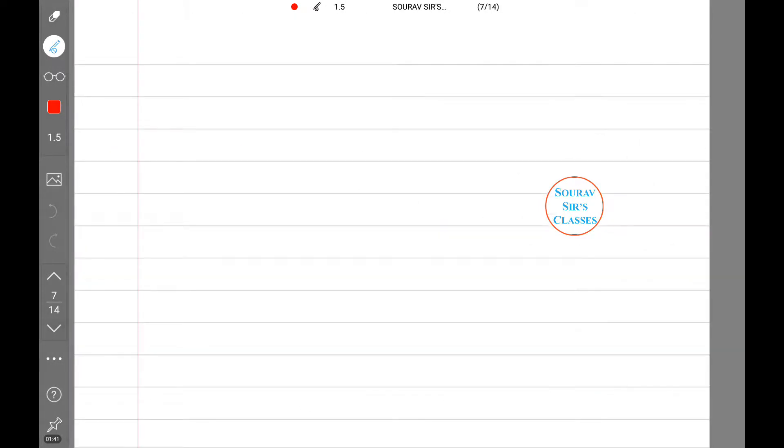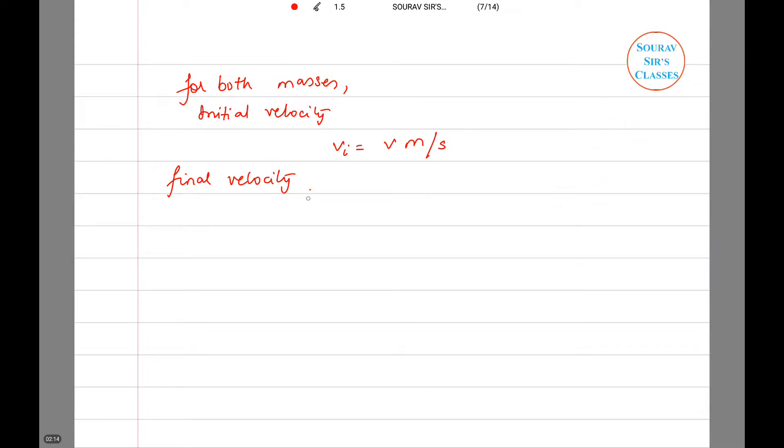So let's work this out. For both masses, initial velocity v_i is equal to v meter per second, and the final velocity v_f is equal to 0.